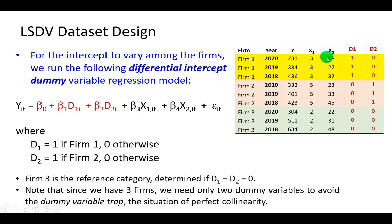For the intercept to vary among the three firms, we're going to create dummy variables where D1 takes on the value of 1 for firm 1, which is what you see right here in the yellow patch.